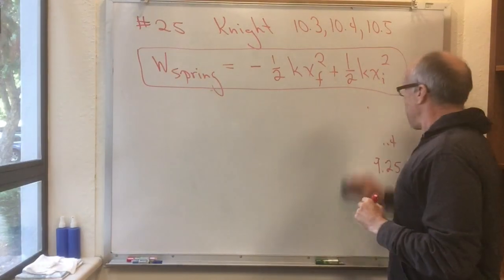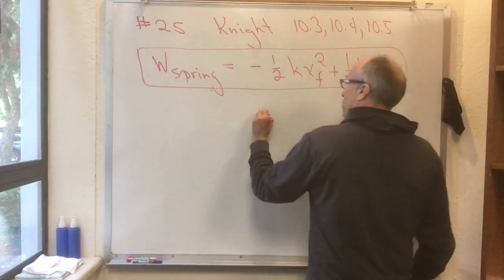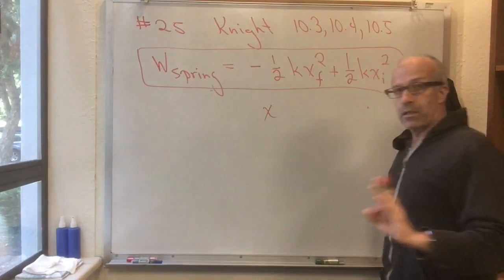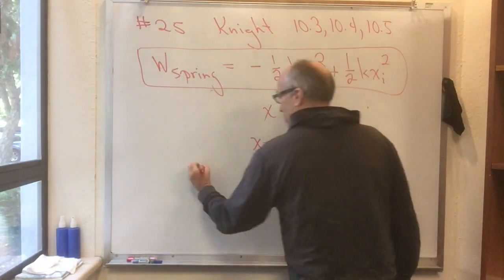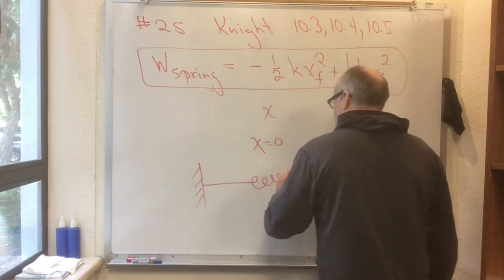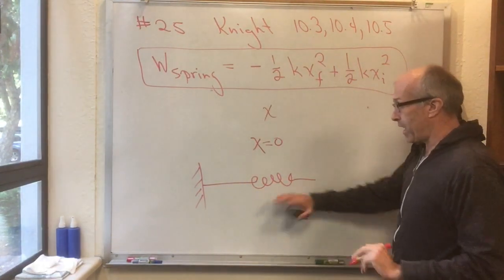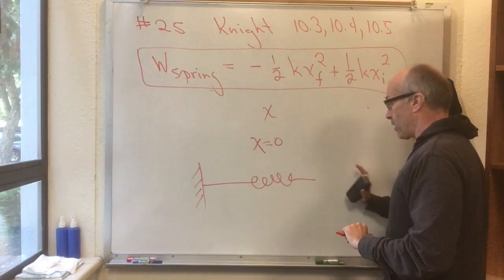Now, I made my life a little bit easier. I chose my coordinate x so that x equals 0 corresponded to the natural rest length of the spring. So if the spring's at rest and it's neither being compressed nor extended, it's at its natural length, I chose my coordinate system so that the coordinate system happened to line up with that natural length.